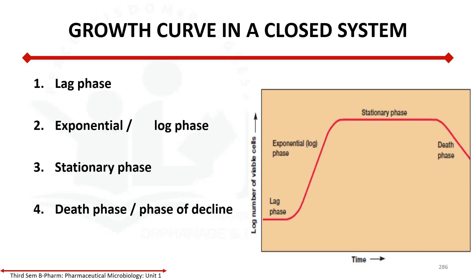There are four phases in the growth curve of a closed system: lag phase, exponential phase or log phase, stationary phase, and death phase or phase of decline. During lag phase, there is no increasing number of cells — that is an important point. In exponential phase, the number of viable cells increases at its highest rate. In stationary phase, there is no further increase in growth, and in death phase, the number of dying cells exceeds the number dividing.